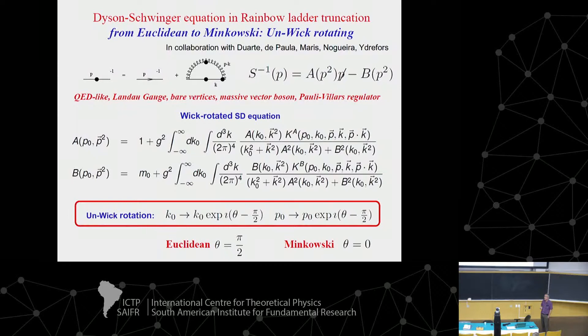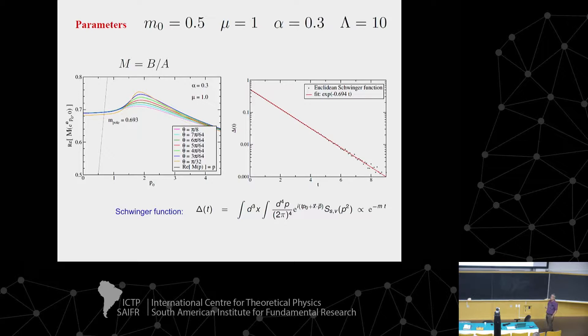The intention is to compare those solutions with the ones we get. You can see B over A — the mass term as a function of the angle. When alpha is not too large, we just have a mass shift; in this case from 0.5 to 0.7 in arbitrary units. This is just the Schwinger function from whose slope you can get the mass.